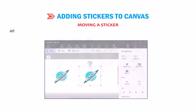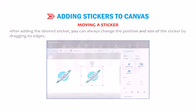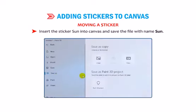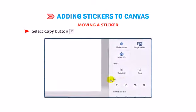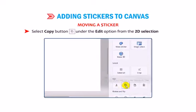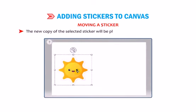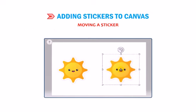Moving a Sticker: After adding the desired sticker, you can always change the position and size of the sticker by dragging its edges. Insert the sticker Sun into the canvas and save the file with the name Sun. Select the sticker using the Select tool from the top menu. Select Copy button under the Edit option from the 2D selection panel. Now, click on the Paste button. The new copy of the selected sticker will be placed over the pre-existing sticker. Select the inserted sticker and drag and drop it at the new location as shown in the figure. The new copy will be placed at the desired location on the canvas.